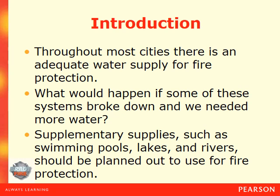Throughout most cities there is an adequate water supply for fire protection. However, if some of these systems broke down, supplementary supplies such as swimming pools, lakes, and rivers should be planned out for fire protection — perhaps in the event of a flood, earthquake, tornado, or something of that nature that disables your water system. After such natural disasters you could possibly have numerous fires, so this is how we plan ahead and mitigate the problem quickly and effectively by planning out these alternate water supplies.